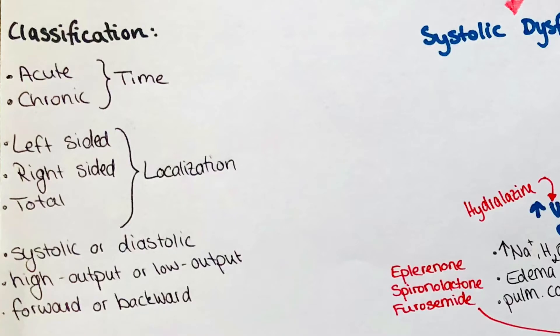There are different approaches to classify the disease. It can either be acute or chronic depending on the onset. Acute heart failure is a medical emergency. It develops quickly and requires immediate medical attention. It is characterized by a sudden onset of symptoms with fast progression.